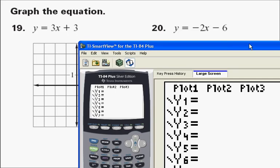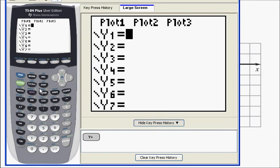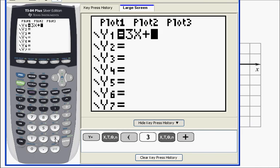Now notice that the first equation is y equals 3x plus 3. So I put y equals x using this button with the x, t, theta, n. Of course I've got to put the 3 in first. 3x plus 3.